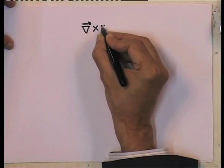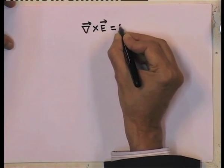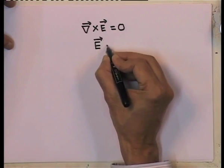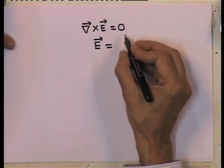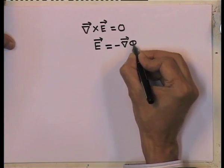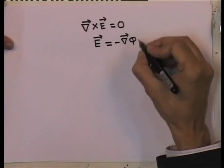In the last lecture, we introduced the concept of electric potential. We said that the electric field being a conservative field means by definition that the curl of the electric field is 0. In that case, I can express the electric field itself as the gradient of a quantity. By convention, we take the negative gradient of a quantity which we call the potential.